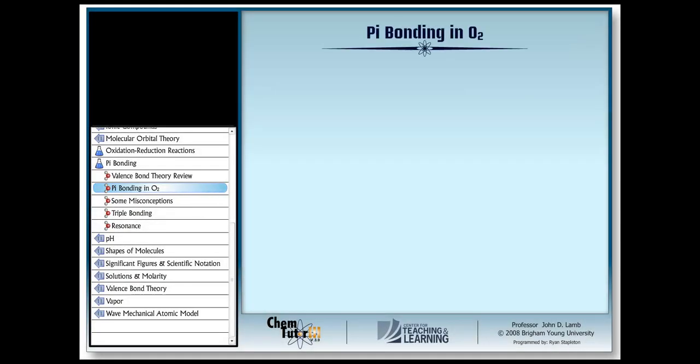So, let's get started. We begin with a relatively simple molecule that contains a double bond, di-oxygen, O2. And, as always, we must first do the Lewis dot structure.